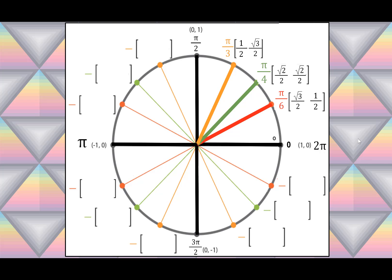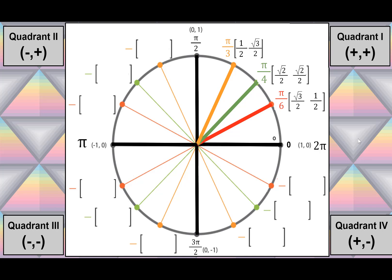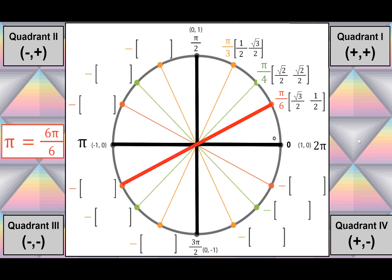We can build the rest of the unit circle just from knowing the first quadrant and remembering the signs of x and y in each of the other quadrants. For example, π/6 is also 6π/6, so adding π gives 7π/6. In quadrant 3 both x and y are negative, so we use the same values as π/6 but make them both negative. One π/6 less than π is 5π/6, which has a negative x and positive y. π away from that is 11π/6, where x is positive and y is negative.